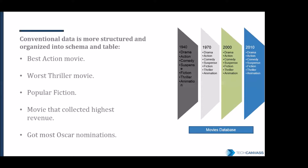But this also comes with limitations. If you want to do deeper analysis — for example, find out why a particular movie failed in a given year — you don't have that data in your database because you organized it strictly under fixed categories and rules. The database only stores what you predefined it to store.